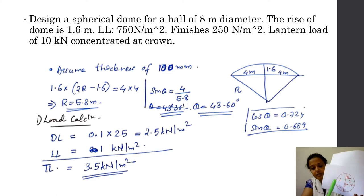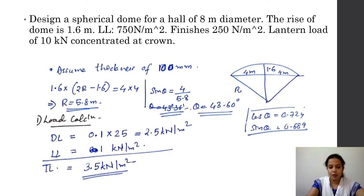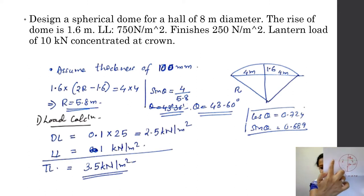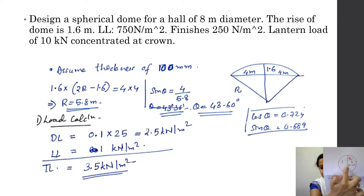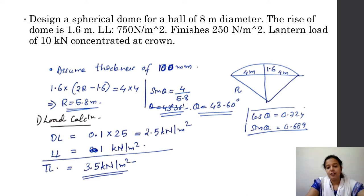Using the circle property: 4 × 4 = 1.6 × (2R − 1.6). From this we get R = 5.8 meters. This gives us the radius of the spherical dome.